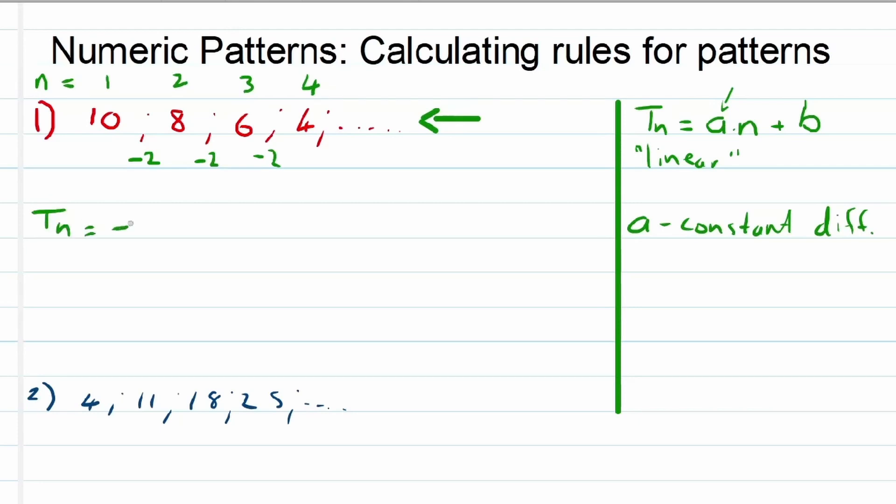So that means Tn is equal to what? Negative 2 times n plus b. Now remember b needs to correct the term so that we can have the value. That's the easy way to do this. So that's if we need the term value.